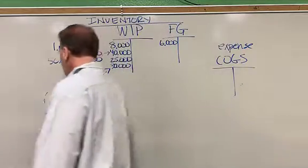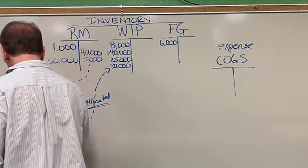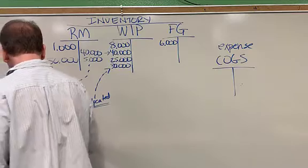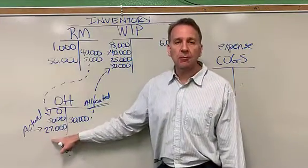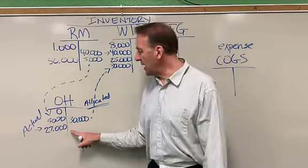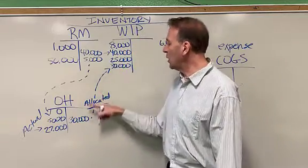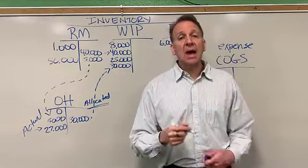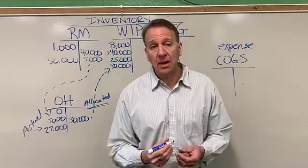So these are actual costs coming in. These are actual items that we purchased or paid for coming in. And then they come out of this account into work in process as we're manufacturing this product that we make.